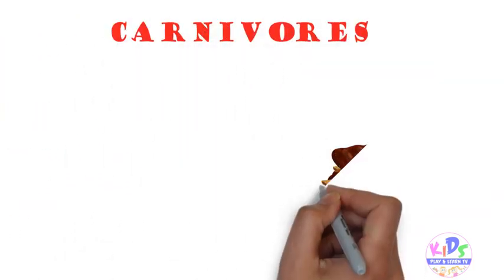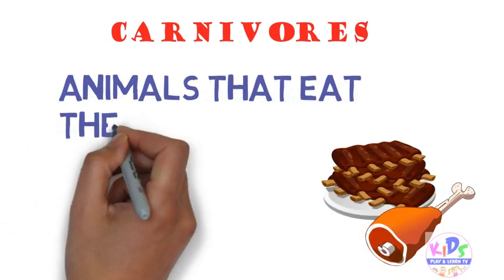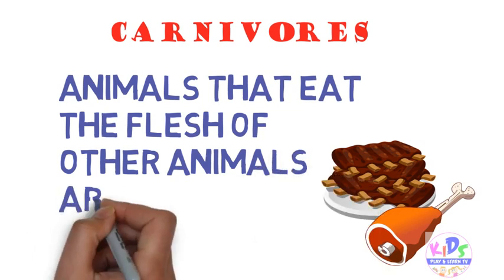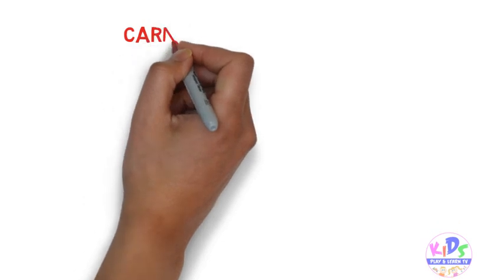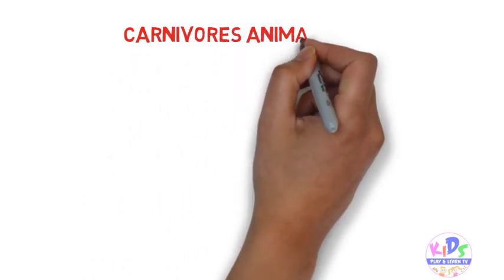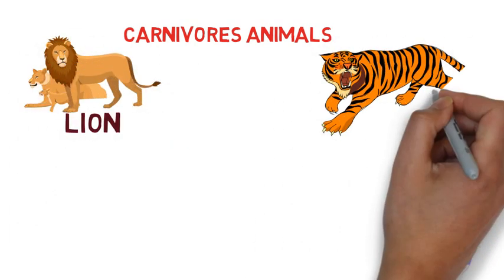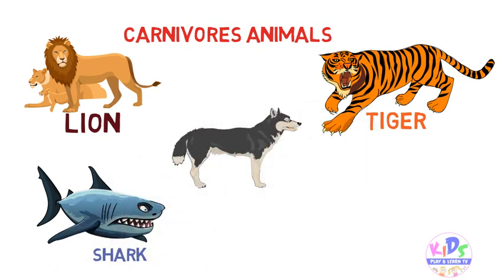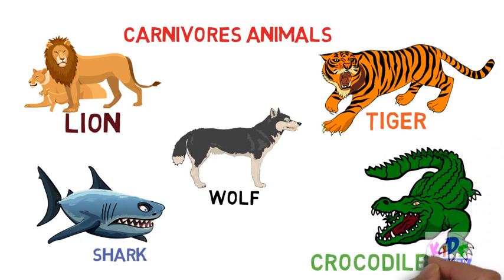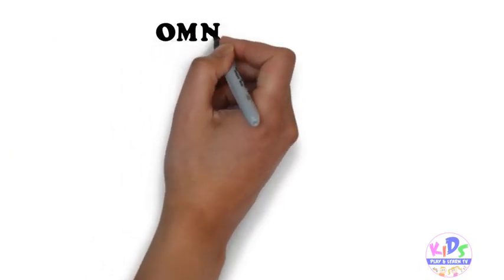Now let's see who are carnivores. Animals that eat the flesh of other animals are called carnivores. Examples of carnivore animals are lion, tiger, shark — which is an aquatic animal — wolf, crocodile, and there are various other carnivore animals present on this earth.